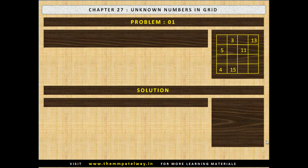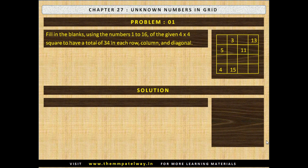Problem 1. Fill in the blanks using the numbers 1 to 16 of the given 4×4 squares to have a total of 34 in each row, column and diagonal. Now stop the video and solve the problem.